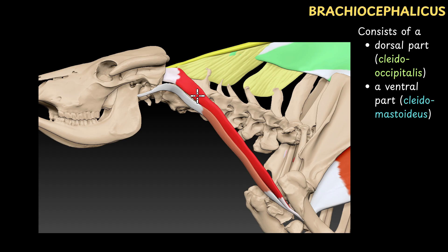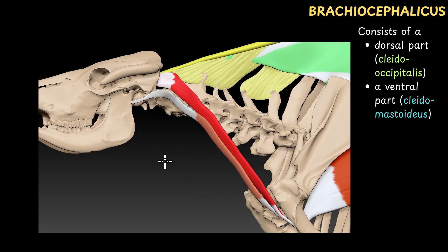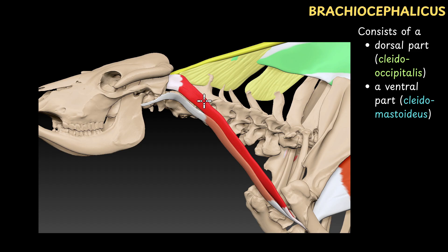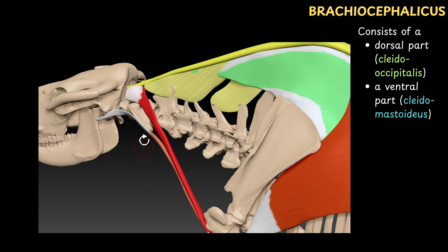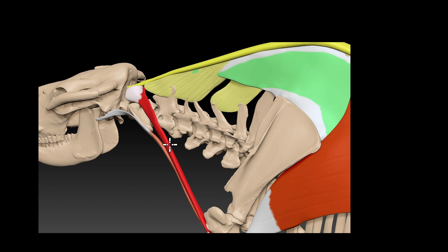Brachiocephalicus has two parts. The dorsal part is called cleidooccipitalis, and the ventral part is called cleidomastoideus. So brachiocephalicus muscle has two parts: the dorsal part called cleidooccipitalis, and the ventral part called cleidomastoideus. First we discuss the origin of the dorsal part, the cleidooccipitalis. The origin is from the occipital bone and ligamentum nuchae.